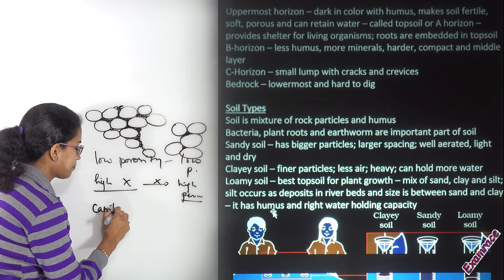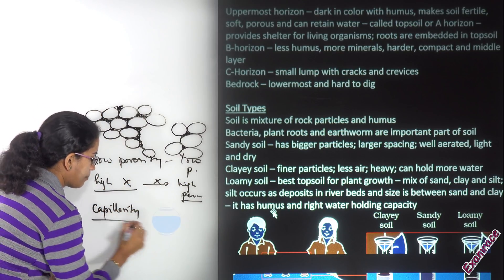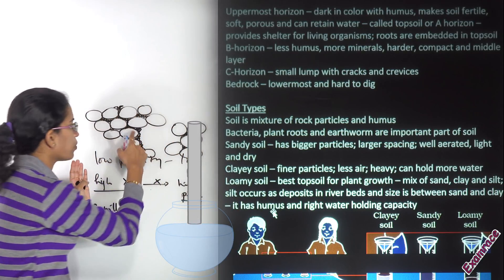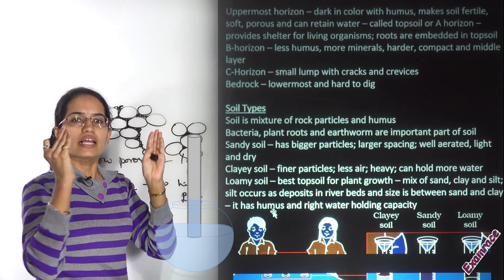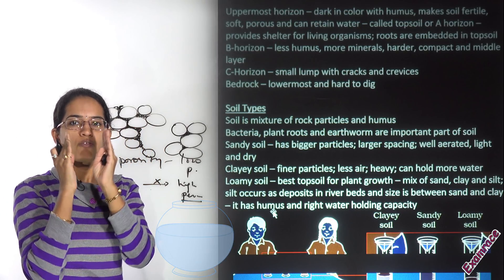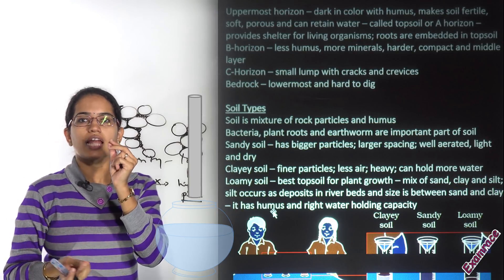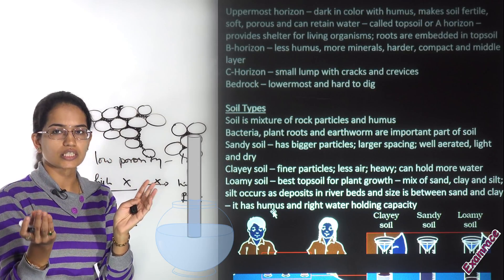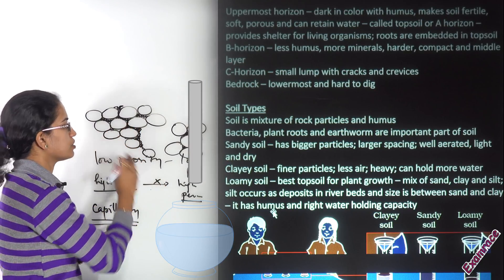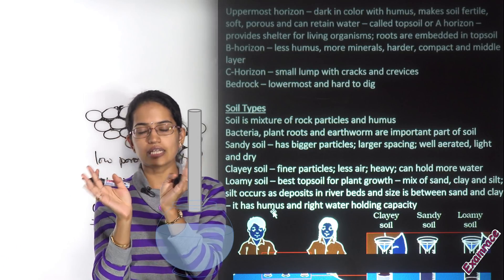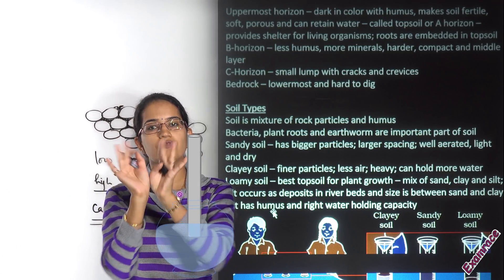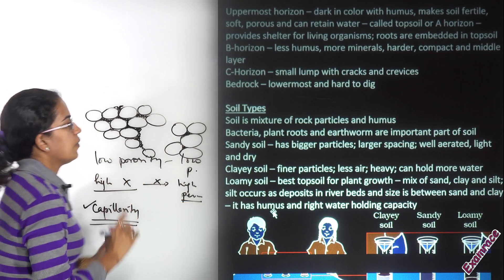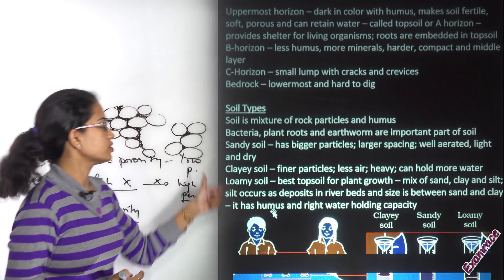The next concept is capillarity. Capillary action works through surface tension. When the interconnections between pores get thinner, water moves not through gravity but through surface tension — and that is capillarity. This capillary movement can be in any direction: downwards, upwards, or sideways.